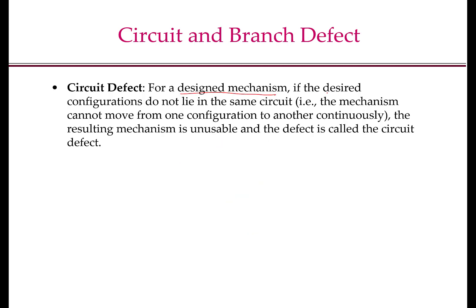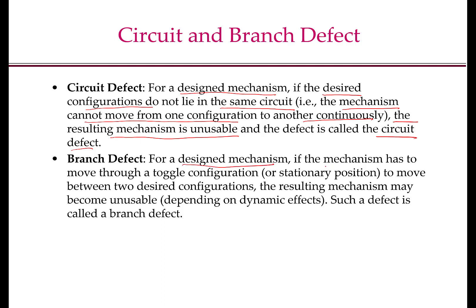With this definition of circuit and branch, we are now ready to define circuit defect and branch defect. For a designed mechanism, if the desired configurations do not lie on the same circuit — that is, the mechanism cannot move from one configuration to another continuously without disassembling and reassembling — the resulting mechanism is unusable and the defect is called the circuit defect. On the other hand, if the mechanism has to move through a toggle configuration or stationary position to move between any two desired configurations, the resulting mechanism may become unusable depending on dynamic effects; such a defect is called a branch defect.